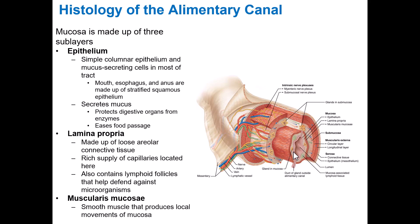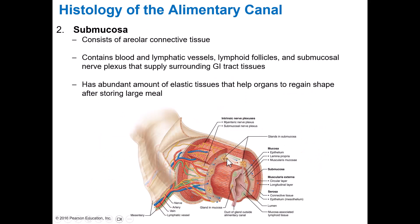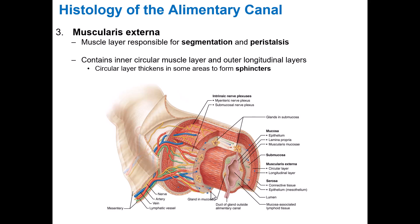The muscularis mucosae is smooth muscle — it helps move just the mucosal layer and does not contribute a great deal to propulsion of food down the GI tract. Superficial to the mucosa is the submucosa, which is connective tissue where we find nerves, blood vessels, and lymphatic vessels. Superficial to that is the muscularis externa — the muscle layer responsible for both segmentation and peristalsis.